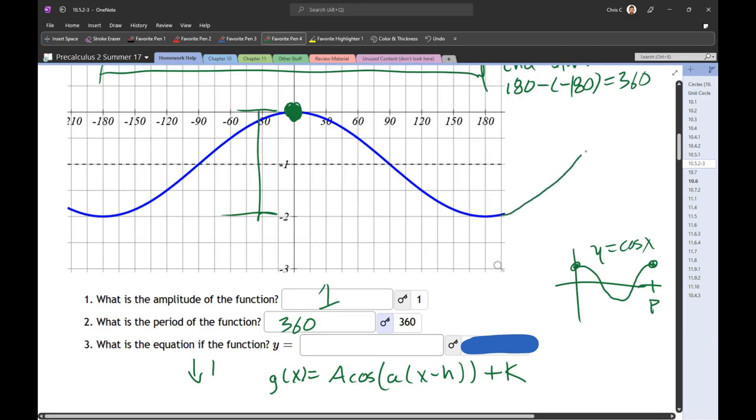And it's gonna come back up. And what x coordinate are we gonna stop at? Well, we already said the period is 360. So if I started at x coordinate 0, I'm gonna stop at x coordinate 360. That would be one full period.